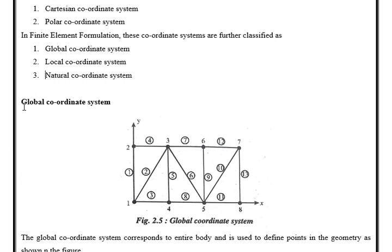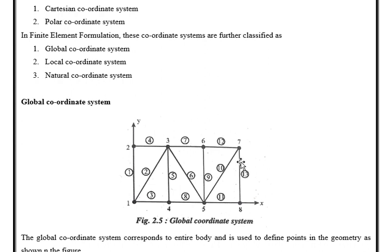We shall learn what the global coordinate system is. Here, if we observe this figure, a geometry is given — we can consider it as a 2D truss. This 2D truss geometry has a number of elements: element 1, 2, 3, 4, etc. The entire geometry is represented in coordinates x and y. Since it is 2D, there is no z-axis. So the entire geometry is represented in x and y — that is known as the global coordinate system. Any point in the geometry is identified with respect to these coordinates x and y.